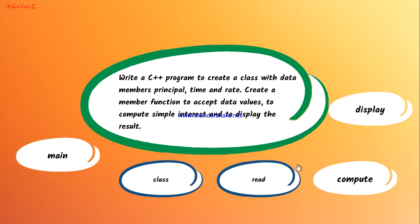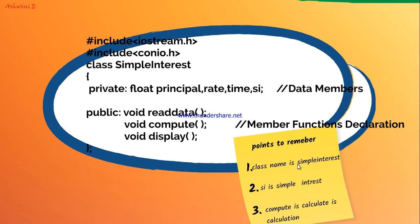Write a C++ program to create a class with data members principal, time, and rate. Create a member function to accept the data values, to compute the simple interest, and to display the result. I hope everyone understood the question.